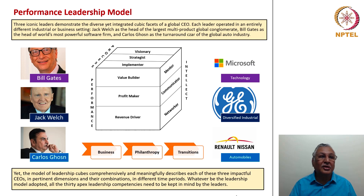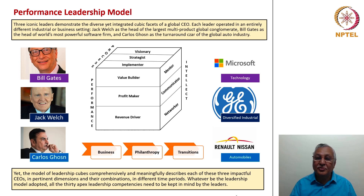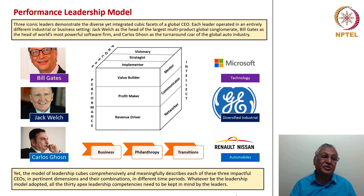Each leader operated in an entirely different industrial or business setting: Jack Welch as head of the largest multiproduct global industrial conglomerate, Bill Gates as head of the world's most powerful software firm, and Carlos Ghosn as the turnaround czar of the global automobile industry at Renault-Nissan. Yet the model of leadership cubes comprehensively describes each of these three impactful CEOs in pertinent dimensions and combinations across different time periods. Whatever be the leadership model adopted, all 30 apex leadership competencies need to be kept in mind — not having them in good proportion could lead to failure on certain dimensions of the cubic model.